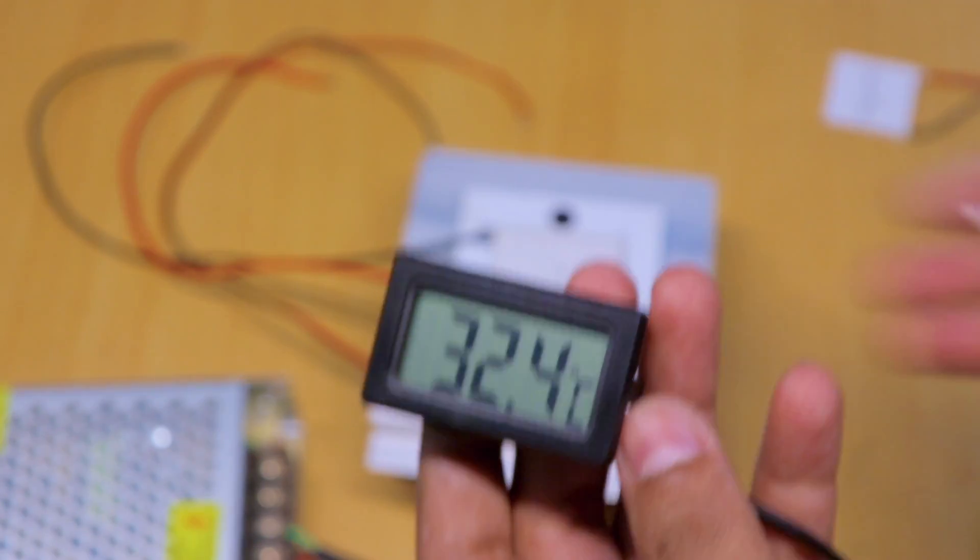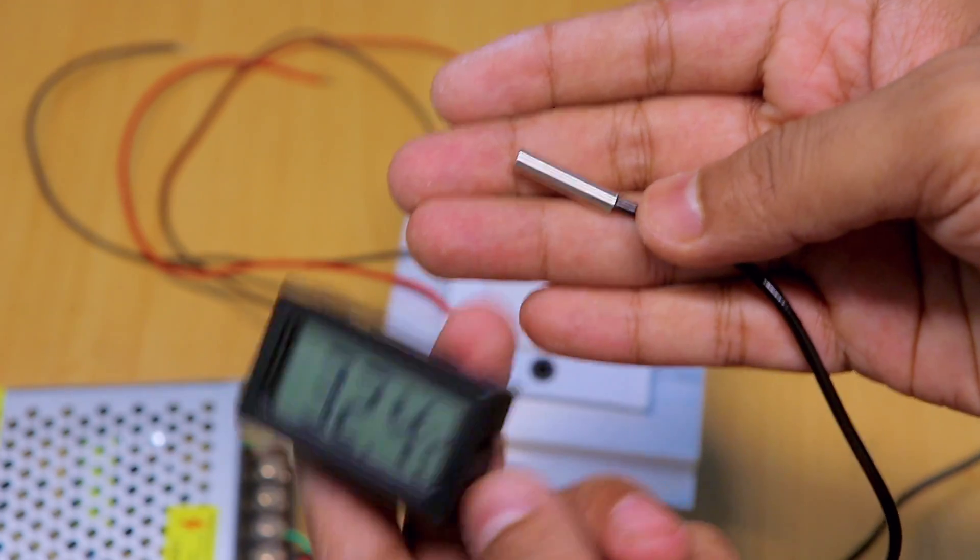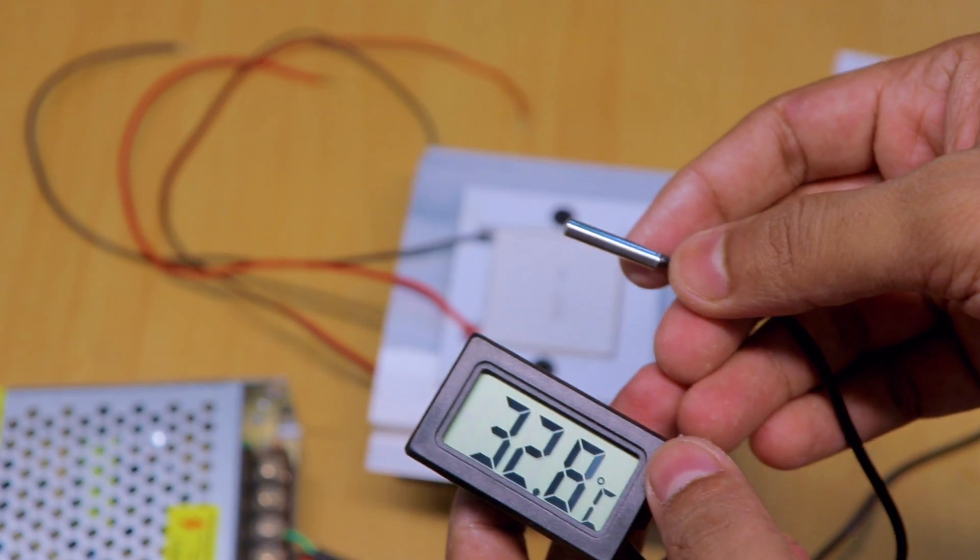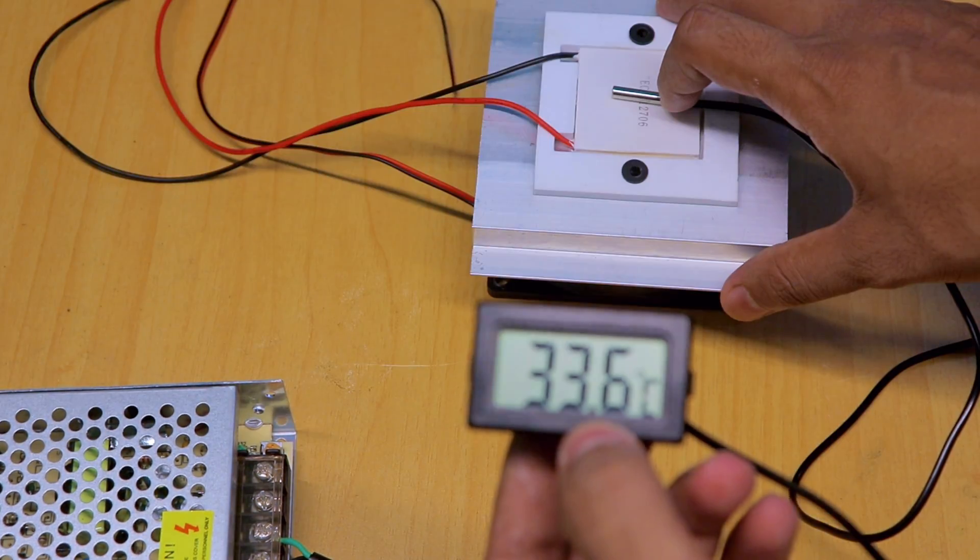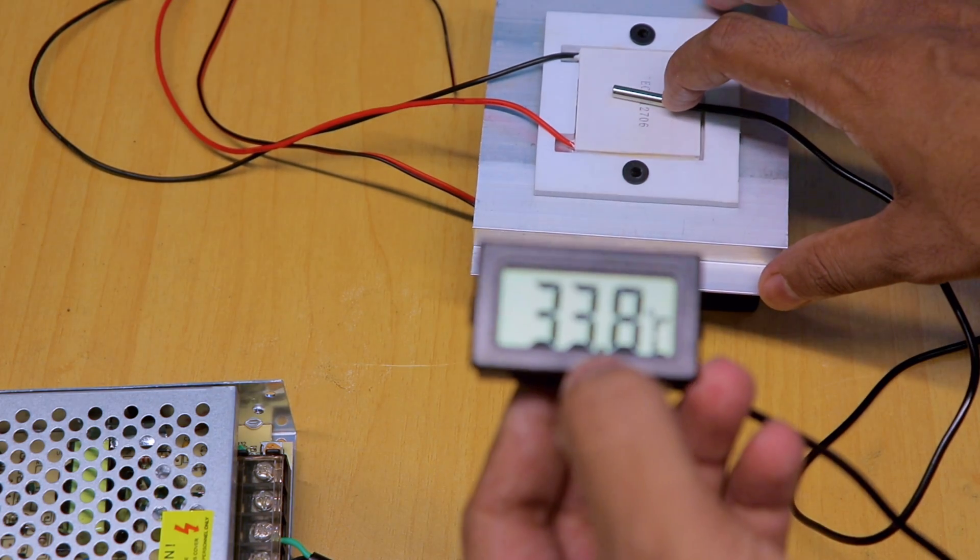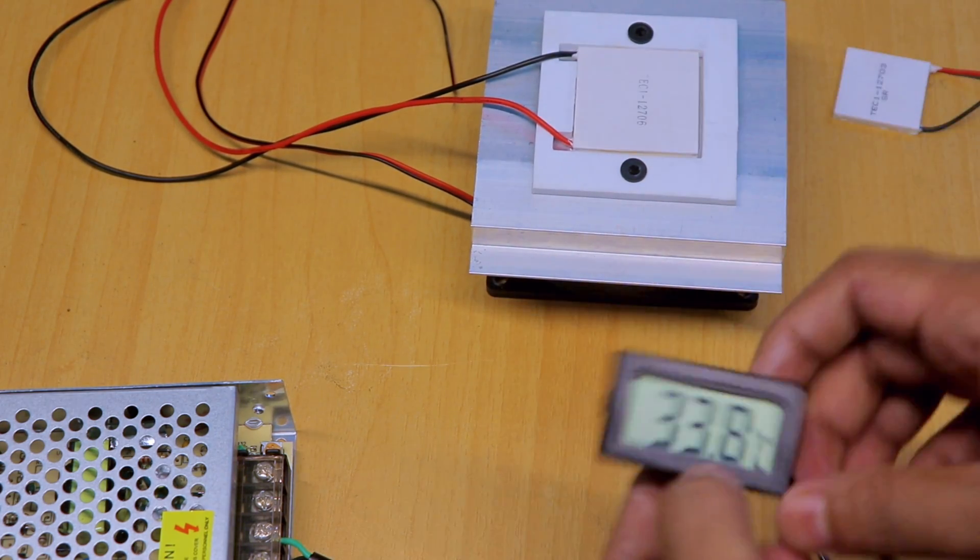This is the temperature sensor and this one is the probe. I am going to place this temperature sensor probe on the cold side of the Peltier module and observe the temperature, what will be the lowest temperature this Peltier module can give.